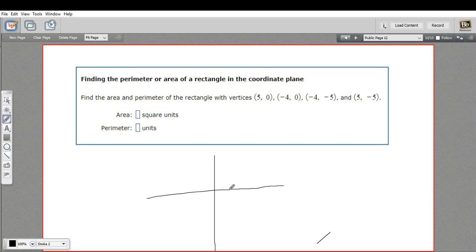So 5, 0 is one of the vertices. So that would be, let's say here, let's say this is 5, 0. Negative 4, 0 is one of the vertices. So that would be over here.